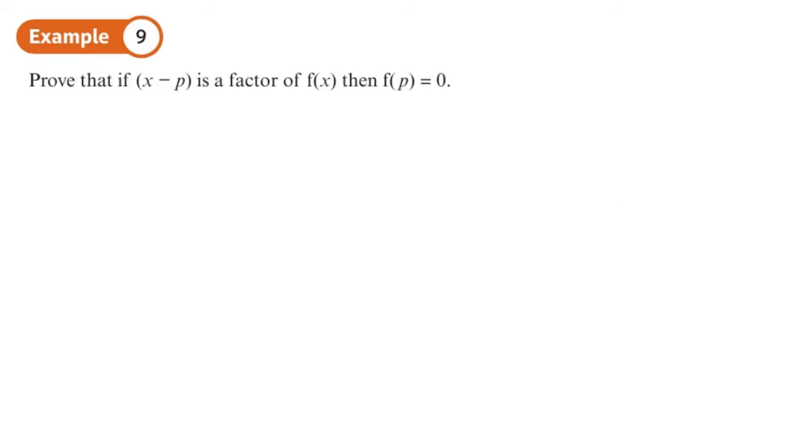Prove that if x minus p is a factor of f(x), then f(p) equals 0. What does this mean? Let's start with an example. This is not going to be part of working, I'm just going to show you why we're doing what we're doing. If I've got f(x) is this function, for example, I know that x minus 3 is a factor of this.